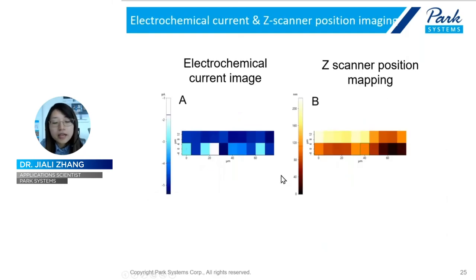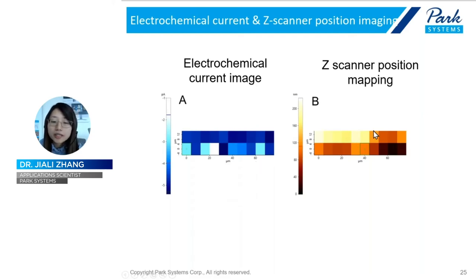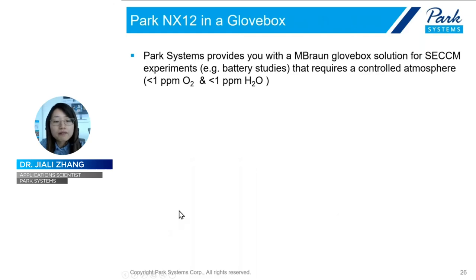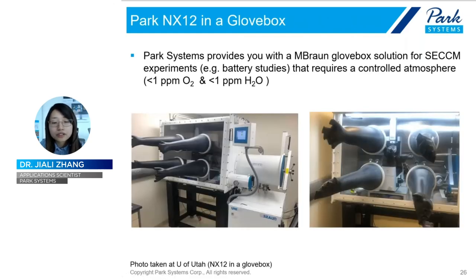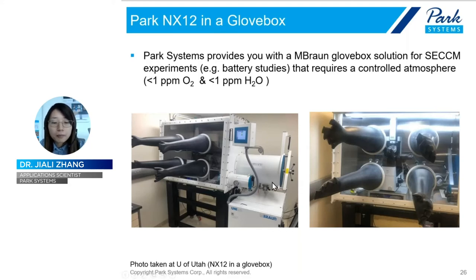In addition, users can also output the Z scanner position when forming each meniscus, so one can correlate the scanner position simultaneously with the EC current mapping. More systematic studies can be done by generating higher-resolution images using more pixels in a small scan area, or by using a smaller pipette or different redox-active species to support advanced studies in electric energy storage such as battery research. Park Systems also provides an MBraun glovebox solution for SECCM experiments that require a controlled environment for samples sensitive to oxygen and water vapor, as shown in this photo of an NX-12S system sitting on an MBraun glovebox at the University of Utah.